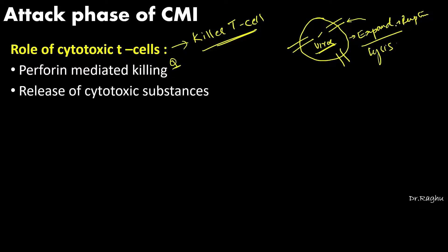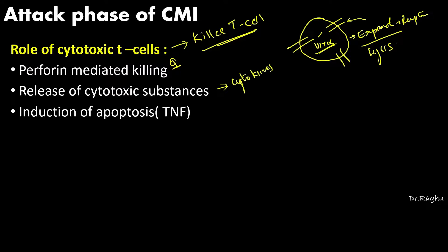The second method of killing is release of cytotoxic substances, also called cytokines. The third method is the cytotoxic T-cell inducing apoptosis in the foreign cell by secretion of tumor necrosis factor, which also results in cell death. So the three killing mechanisms are: perforin-mediated killing, release of cytotoxic substances, and induction of apoptosis.